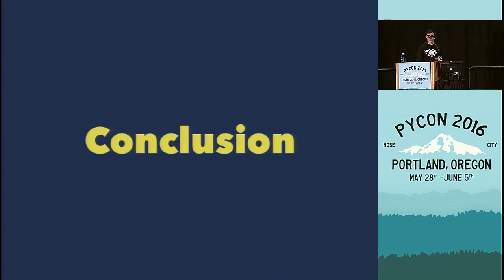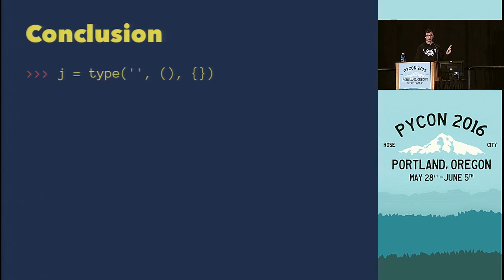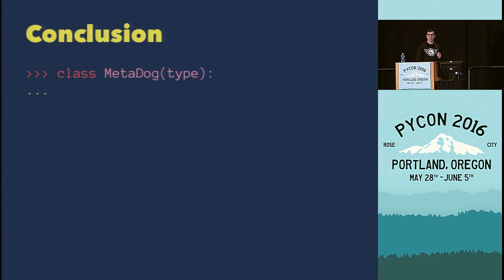To conclude, we learned a few things: the type built-in always gives us classes; this is the bare minimum to create a new class; and we probably don't want to do that. We learned that when creating a metaclass you inherit from type, and to give a class a metaclass we use a keyword argument.